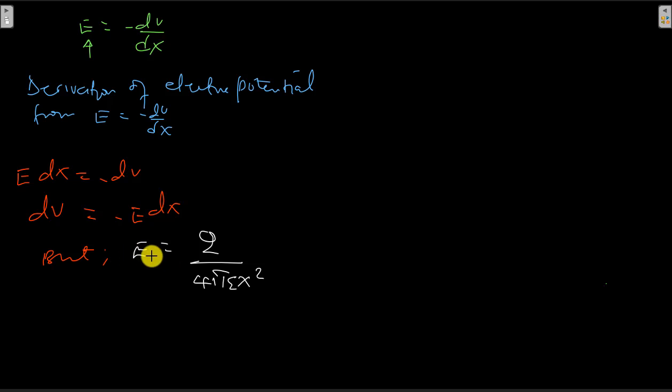So we're going to substitute that here. Therefore, dV is going to be negative q over 4πε x squared times dx.